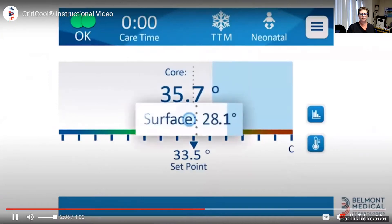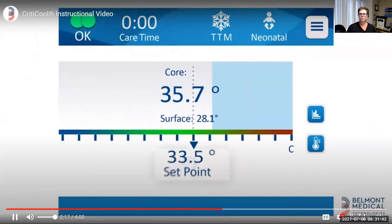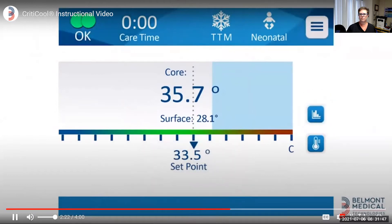Core temperature. Surface temperature. Duration of treatment. The selected mode. Adult or neonatal mode. Circulation icon shows that water is flowing through the wrap. Set point temperature. Main menu icon. Temperature graph icon. Set point selection icon.